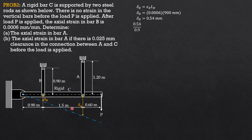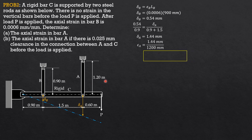Having found delta B, we solve delta A by similar triangles: 0.54 is to 0.9 as delta A is to (0.9 plus 1.5). Solving, delta A equals 1.44 mm. Therefore, the strain in bar A is delta A over the length of A: 1.44 over 1200 mm. The actual strain in bar A is 0.0012 mm per mm.